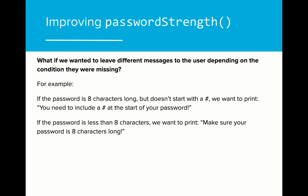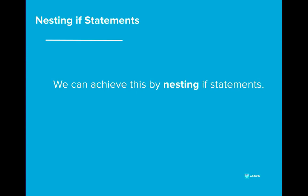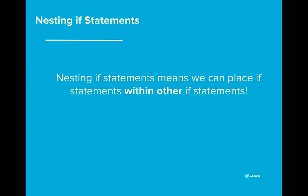But what if we wanted to improve this even more? Instead of just writing that the strength of the password is bad, we want to add a specific message to tell the user what they need to do to improve their password. For example, if the password is eight characters long but doesn't start with a pound sign, we want to print: you need to include a pound sign at the start of your password. If the password is less than eight characters, we want to print: make sure your password is eight characters long. We can achieve this by nesting if statements within one another. Nesting is the process of placing a control structure within another control structure. We can put if statements inside if statements to make our programs even more complex.